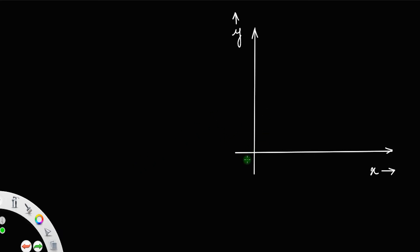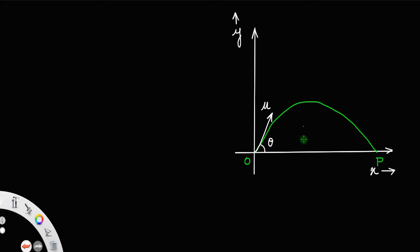Let us consider a projectile projected from the point O, and let this be the path of the projectile — finally it reached the point P. Let u be the velocity of projection and theta the angle of projection. In this video, we will discuss about the maximum height covered by the projectile.